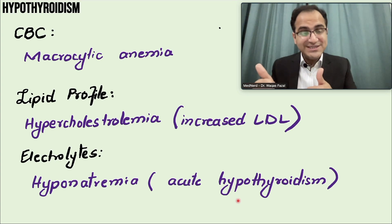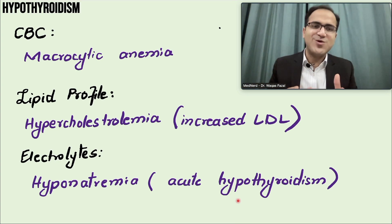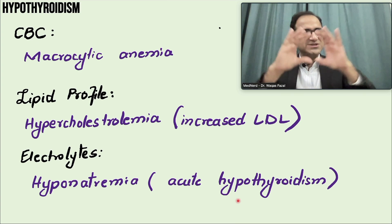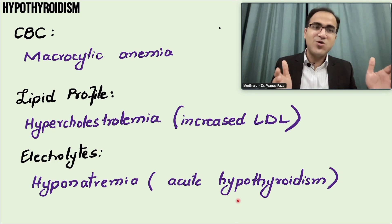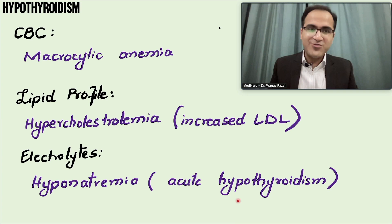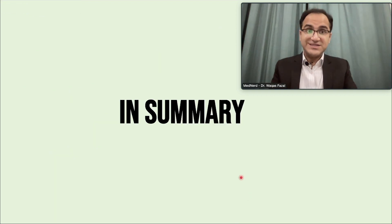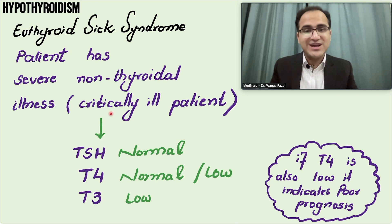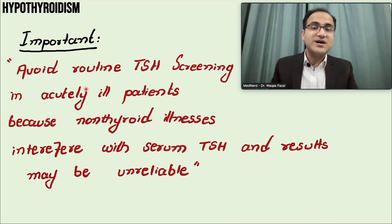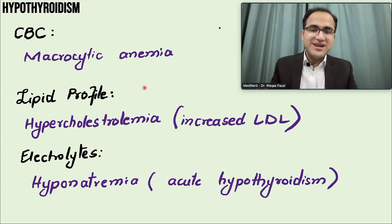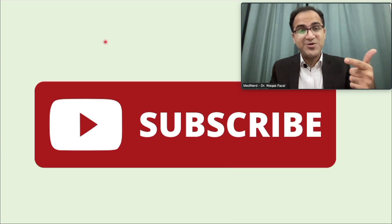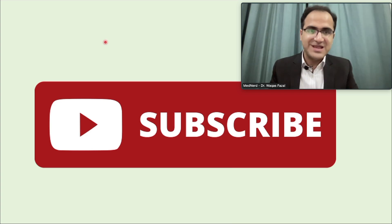This was all about the clinical presentation and diagnosis of hypothyroidism. In the next video, we will discuss how to treat hypothyroidism in detail — covering treatment of subclinical hypothyroidism, overt hypothyroidism, and surgical methods. Key summary points: the diagnostic workup, what subclinical hypothyroidism is, secondary and tertiary hypothyroidism, euthyroid sick syndrome, why T3 is not used for diagnosis, why you should not check TSH in acutely ill patients, and other important lab findings.